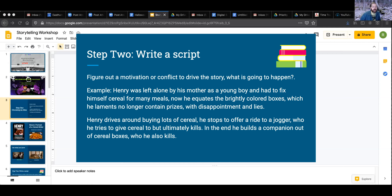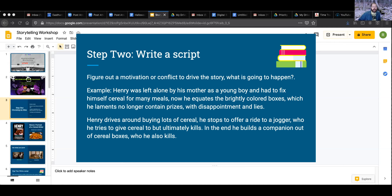For my Henry: Portrait of a Serial Killer parody, I decided that Henry was left alone by his mother as a young boy and had to fix himself cereal for many meals. Now he equates the brightly colored boxes — which no longer contain prizes like they did in his youth — with disappointment and lies. In the film, Henry drives around buying lots of cereal, stops to offer a ride to a jogger he tries to give cereal to but ultimately kills. In the end, he builds a companion out of cereal boxes, whom he also kills.